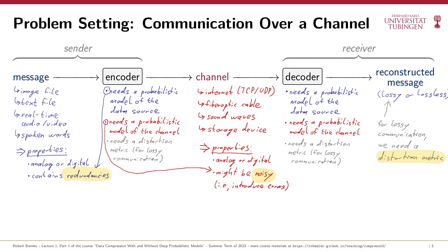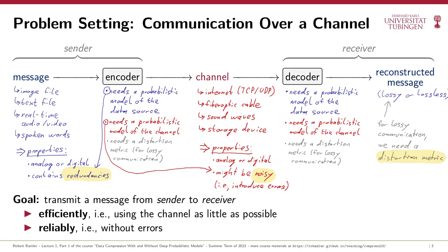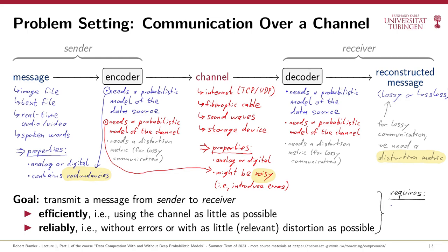Let's recap what we've learned so far. Our goal is to communicate some message from a sender to a receiver. We want this communication to be fast — using the channel as little as possible — but also reliable, meaning we can decode the message either without any errors for lossless communication, or with some acceptable amount of distortion for lossy communication. To achieve this goal we need three things: a probabilistic model of the data source, a probabilistic model of the communication channel, and in the case of lossy communication, a distortion measure.